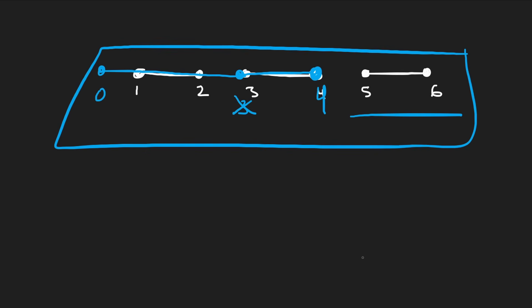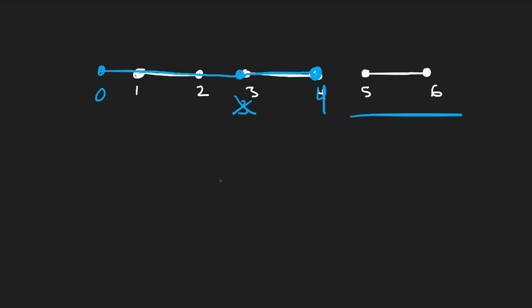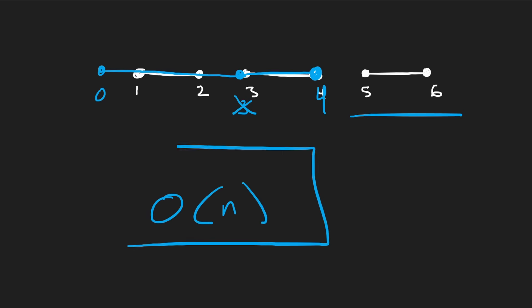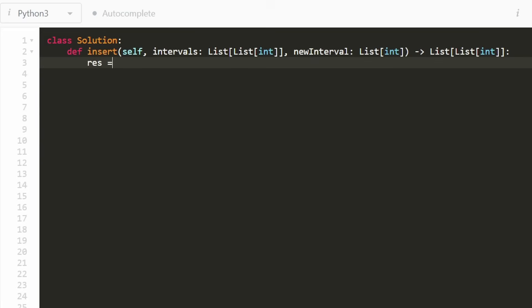So that's the general algorithm. Since the intervals are already sorted, we just have to iterate through the entire list once. So the overall time complexity is going to be O(N). That's also going to be the memory complexity if you count the memory we're going to use to create the result array. With that being said, we can hop into the code now. We are going to have a result — a result of intervals.